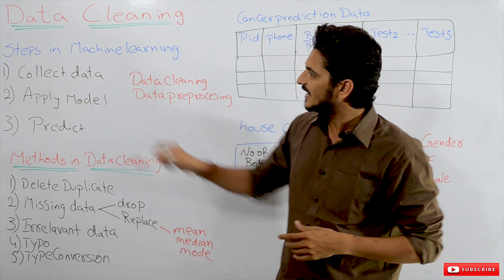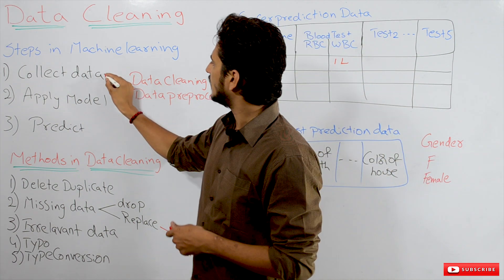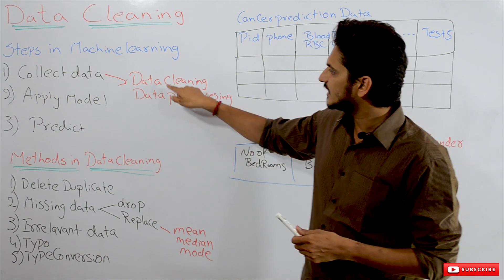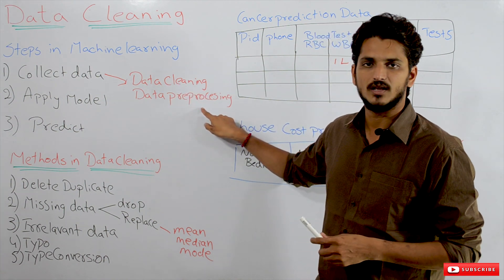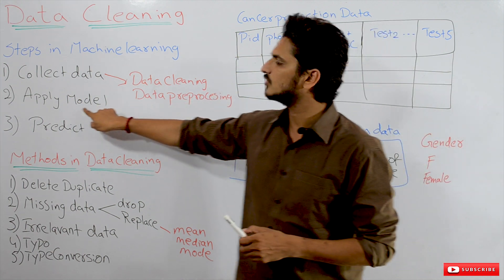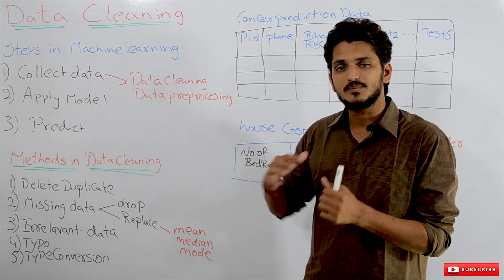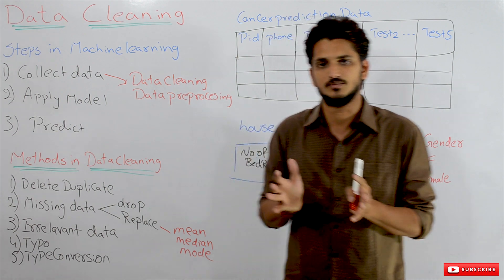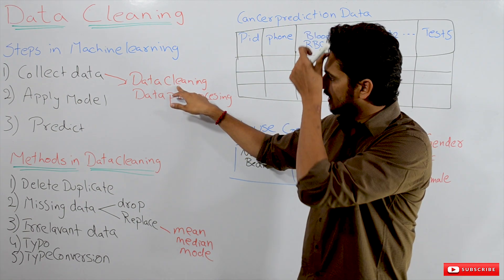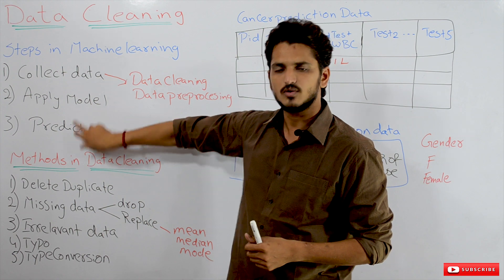Coming here, after collecting the data, what we have to do is we have to clean the data. After cleaning the data, we have to apply data pre-processing techniques. After completion of data pre-processing, then we have to apply a model on this pre-processed data. These are the steps we have to follow in machine learning algorithms. To repeat: collect the data, apply data cleaning methods, then go for data pre-processing, then apply the model, then go for prediction.